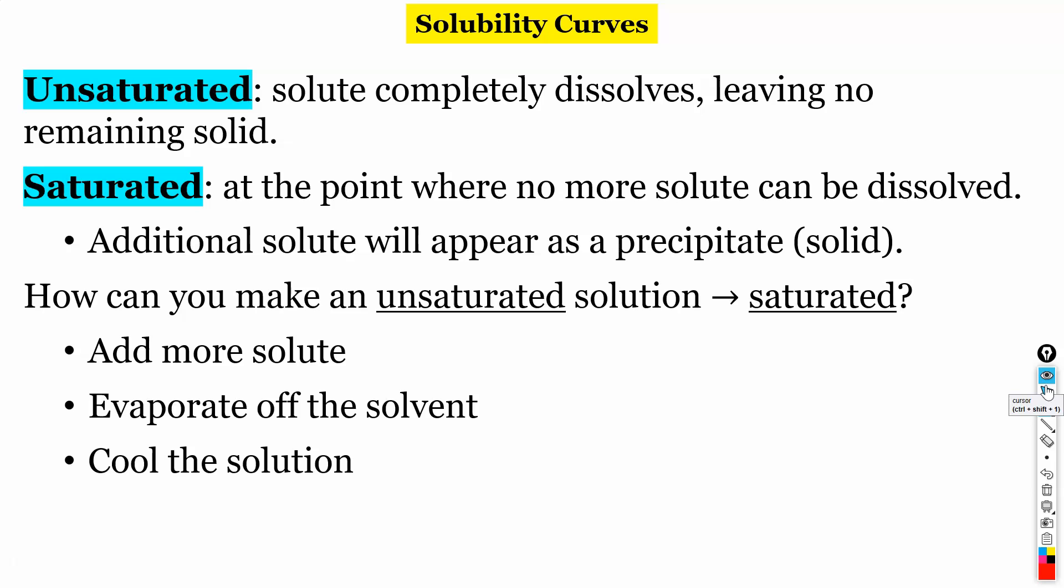So to reach the point of saturation you can add more solute. So again thinking of Kool-Aid that would be our powder. You can evaporate off some of the solvent so the water. Okay so the water is like where you can put the powder. So if you eliminate places for that powder to dissolve you're gonna be able to make it saturated.